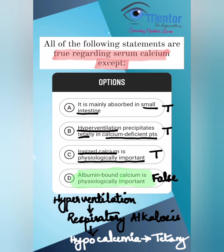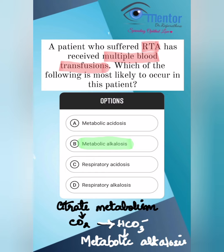Coming to the next question — citrate. Why is it used in stored blood? Because it is an anticoagulant. Now what are the effects of citrate in stored blood? Let's remember MBC. What is M? Citrate is metabolized into carbon dioxide, therefore bicarbonate.